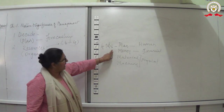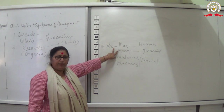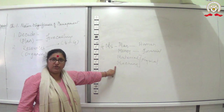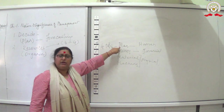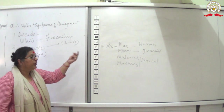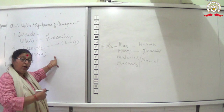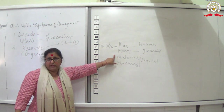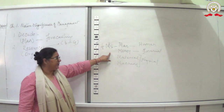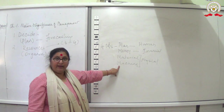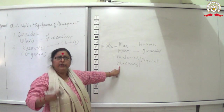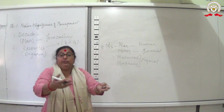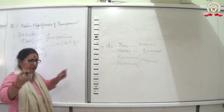So in organizing, you put your plan into action by collecting resources. For example, if you plan to study from 3 to 4, you take out your NCERT, your register, pen, and organize your study table. You apply for loans, issue shares and debentures, place orders for machinery and raw material, and think about how many people you require.